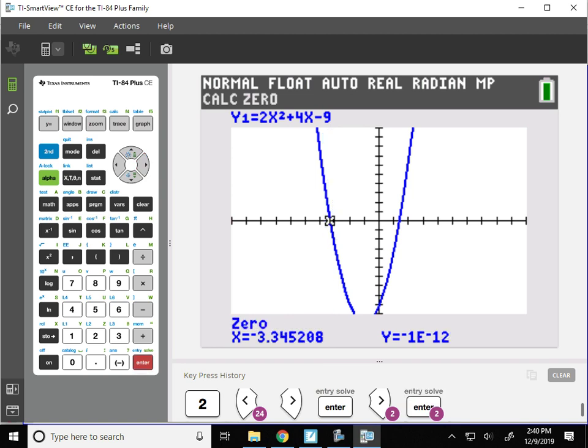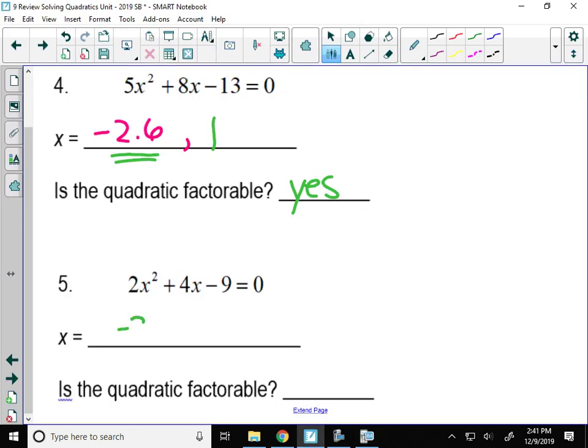I'm going to round to the nearest hundredth, so two decimals. That gives negative 3.35. And that was rounded, remember.